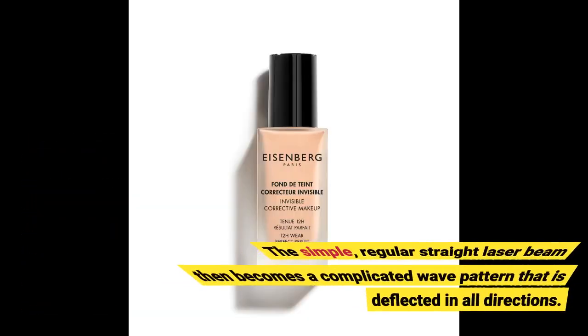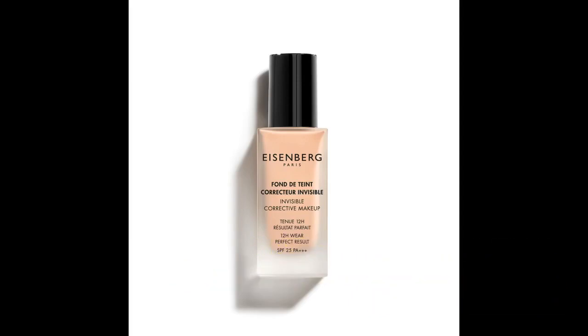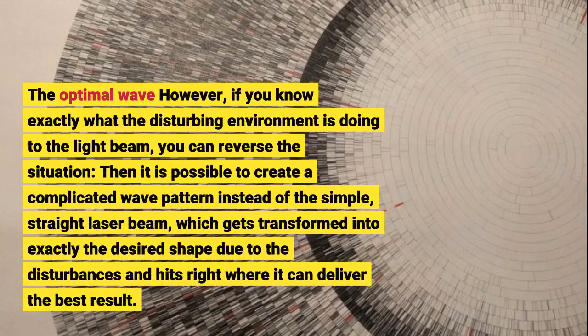The situation is quite similar when you want to examine tiny objects inside biological tissue — the disordered environment disturbs the light beam. The simple, regular straight laser beam then becomes a complicated wave pattern that is deflected in all directions. However, if you know exactly what the disturbing environment is doing to the light beam, you can reverse the situation. Then it is possible to create a complicated wave pattern instead of the simple, straight laser beam, which gets transformed into exactly the desired shape.